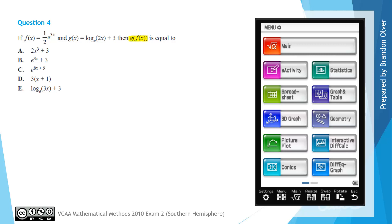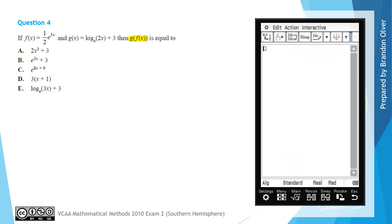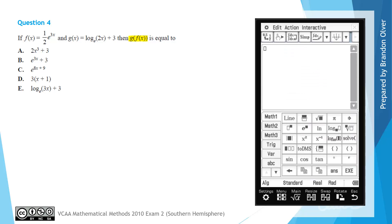So while it is possible to do this question by hand, we are going to now use the calculator to do this problem quickly and efficiently. On the CAS calculator, go into the main menu. Next, we can bring up the keyboard by pressing the keyboard button on the hard keypad.